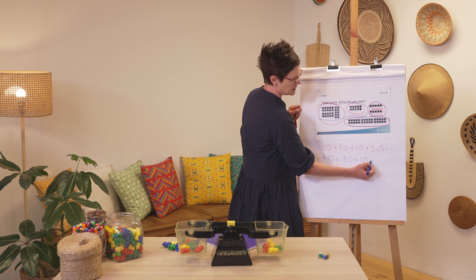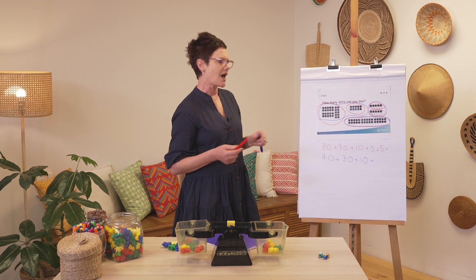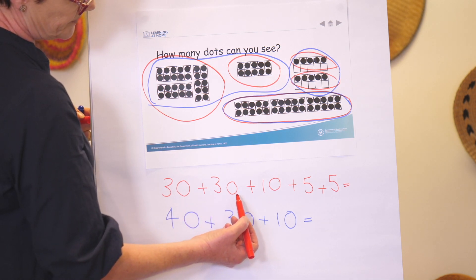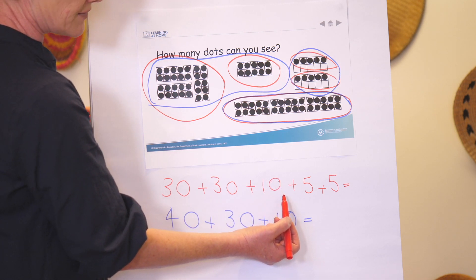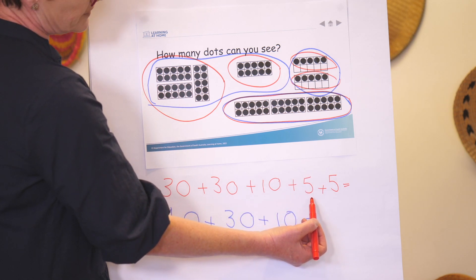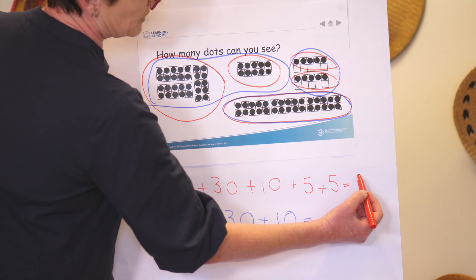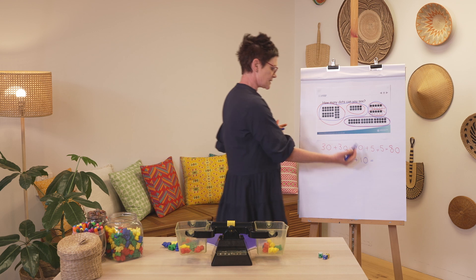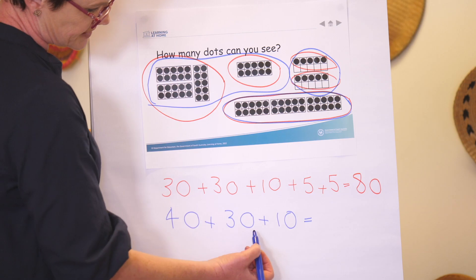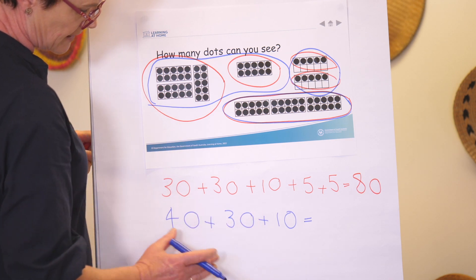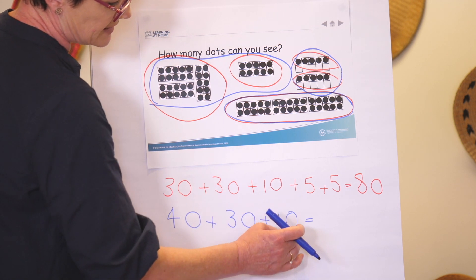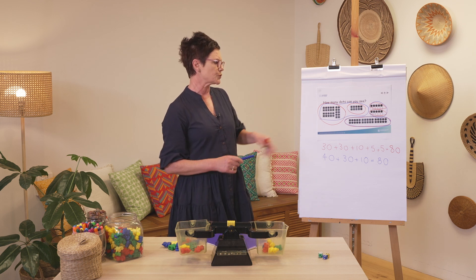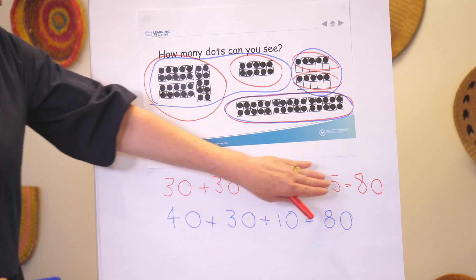Let's see if these number sentences add up. I've got 30 plus 30 — three plus three is six, so I have 60. 60 plus 10 is 70, 70 plus 5 is 75, and another 5 gets me to 80. Now checking the bottom sentence: 40 plus 30 — four plus three makes seven — so 70 plus another 10 gives me 80. I've been able to use the parts to make my whole.